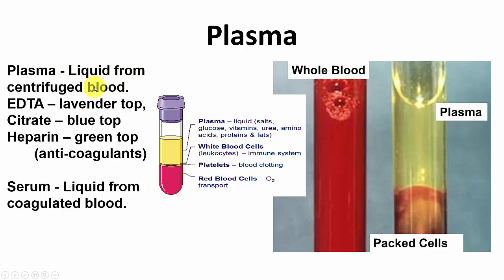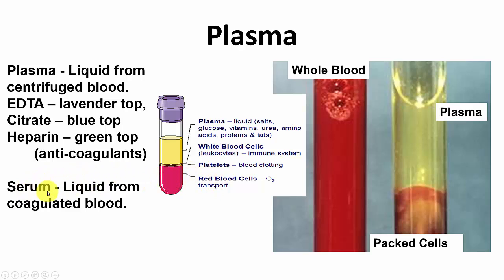Blood plasma is the liquid from centrifuged blood. If you take whole blood and centrifuge it, keeping it from clotting by adding chelating agents such as EDTA (lavender top tube), citrate (blue top tube), or heparin which activates antithrombin 3, you get plasma, a buffy coat of white blood cells and platelets, and packed red blood cells. If you allow blood to clot, the liquid squeezed out is called serum. Plasma comes from unclotted blood; serum comes from clotted blood.